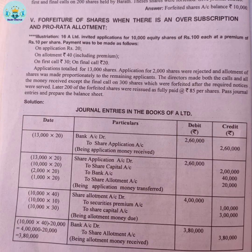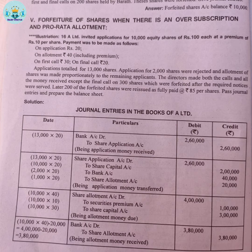Application value is 13,000 shares. The balance is 2,000. Application for 2,000 shares were rejected; allotment shares were made proportionally to the remaining applicants. Allotment shares: 2,000 applications are rejected, 1,000 applications are considered. Allotment shares are made proportionally to the remaining applicants.